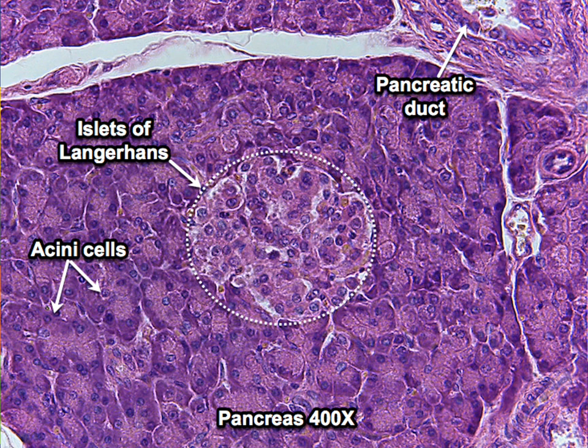Here we have a high magnification view focused on an islet of Langerhans, or a pancreatic islet — a cluster of the endocrine cells, including alpha cells which produce glucagon, and beta cells which produce insulin.